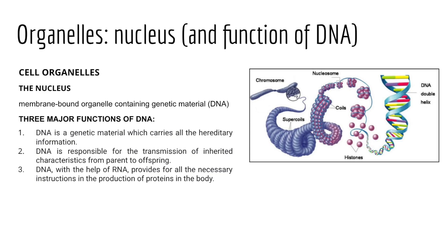Recall from last week's study of nucleic acids as a macromolecule — nucleic acids have three main functions. DNA codes for hereditary information in the form of genes. DNA is responsible for the transmission of hereditary information from parent to offspring via chromosomes. With the help of RNA, ribosomes, and a two-step process called transcription and translation, DNA provides all the instructions needed for the production of protein. The nucleus is key for carrying genetic material to pass on to offspring or to make the proteins our body needs.